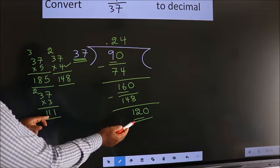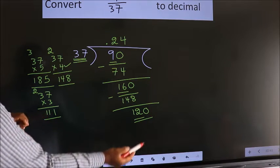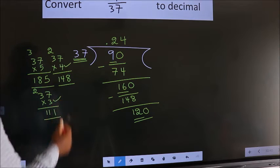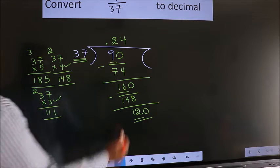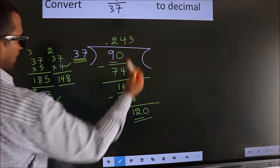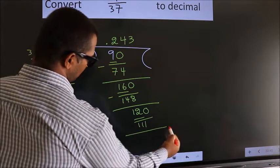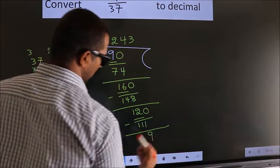So we get 11. So we get 111. If we take 4 that exceeds 120. So we should go with 3. So, 37 3 times. 111. Now, we subtract. We get 9.